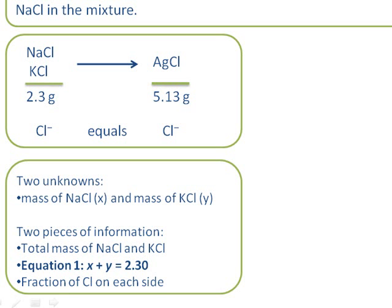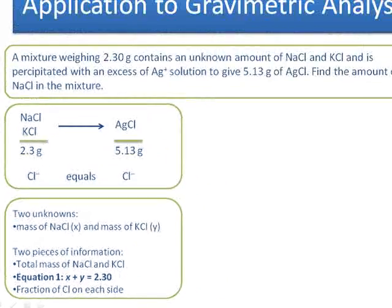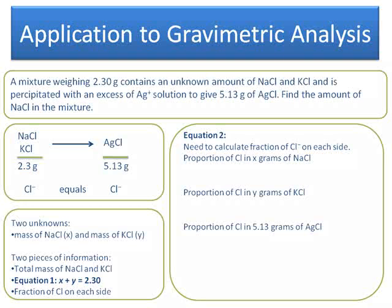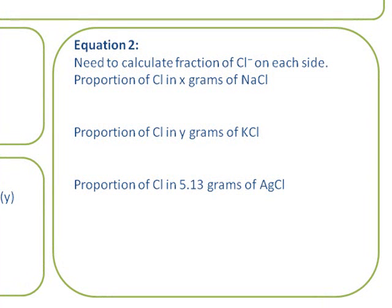We know the fraction of chloride on each side, so we need to manipulate this to build our second equation. We need to calculate the fraction of chloride on each side. This is done by working out the proportion of chloride in each of the three compounds and then adding them up.